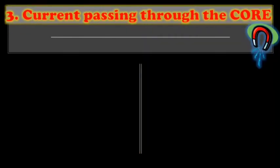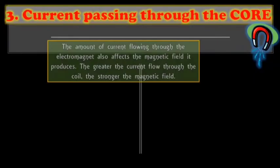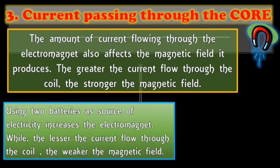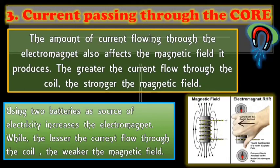Number three factors that current passing through the core. This is now the battery. The amount of current flowing through the electromagnet also affects the magnetic field it produces. The greater the current flow through the coil, the stronger the magnetic field. When using two batteries, a source of electricity increases the electromagnet. While the lesser the current flow through the coil, the weaker the magnetic field. When you use more batteries in the electromagnet, it can attract more metal objects.